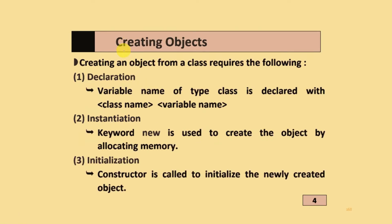Creating objects: if you want to create objects from a class, it requires the following: First, declaration. Second, instantiation. Third, initialization.